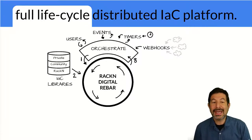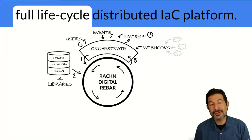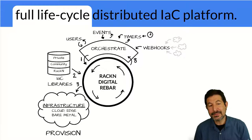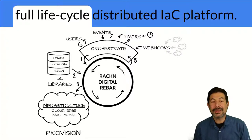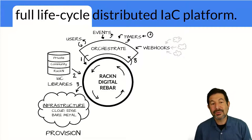Foundationally, we have to have infrastructure as code libraries — ones that we build, ones that our community builds, and ones that our customers build. That provides the foundation for consistent, repeatable operations. All of that is used to manage infrastructure: cloud, bare metal, edge. We manage it all in an abstracted way.